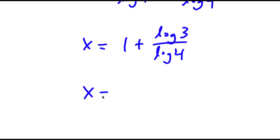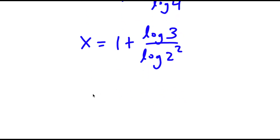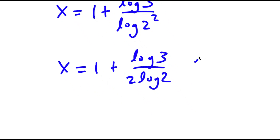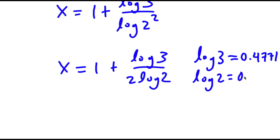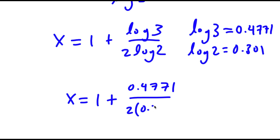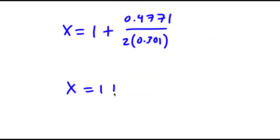Log 4 equals log of 2 squared, so x equals 1 plus log 3 over log 2 squared. And log 2 squared is the same thing as 2 times log 2. Log 3 equals 0.4771 and log 2 equals 0.301. So x equals 1 plus 0.4771 over 2 times 0.301, which equals 1 plus 0.7925, giving x equal to 1.7925.